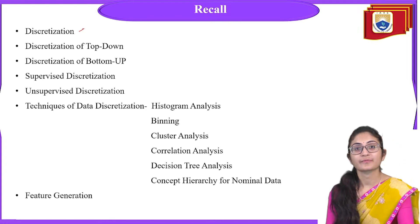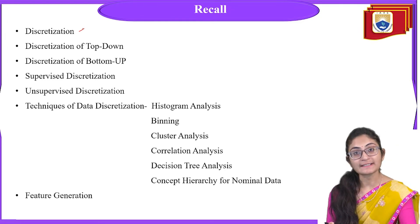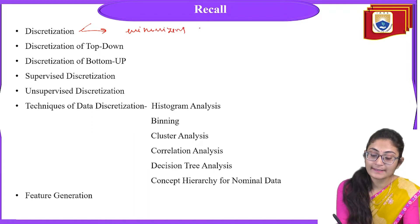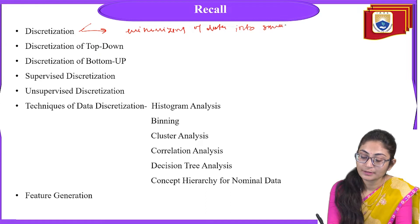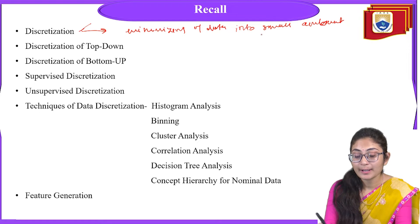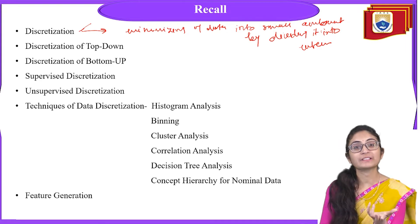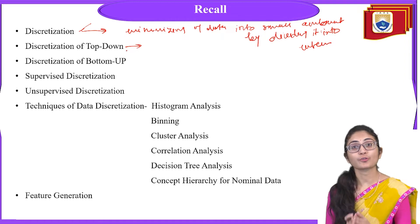In the last class we covered discretization: top-down discretization, bottom-up discretization, supervised discretization, unsupervised discretization, and some techniques of data discretization, along with feature generation. Discretization means minimizing data into a small amount by dividing it into intervals — that is, dividing your data into intervals and giving that data some specific interval levels.